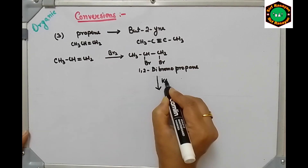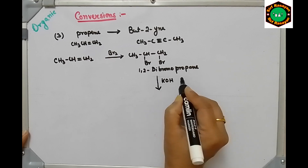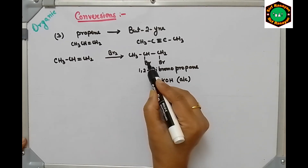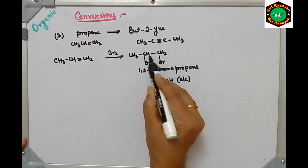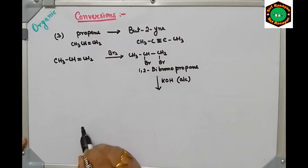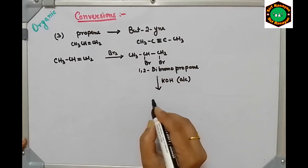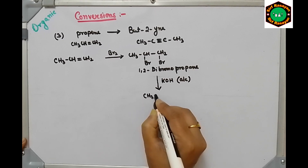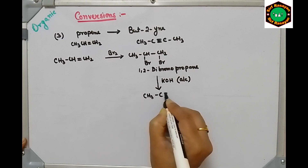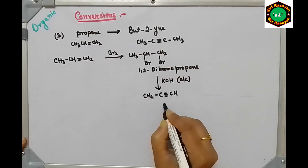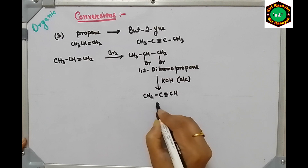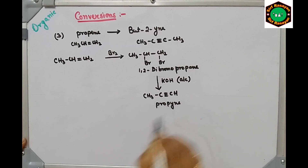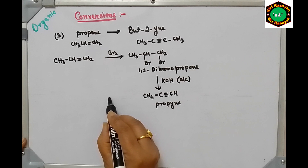Now treat 1,2-dibromopropane with KOH (potassium hydroxide). Removal of HBr twice will take place and we will get propyne (CH3-C≡CH).